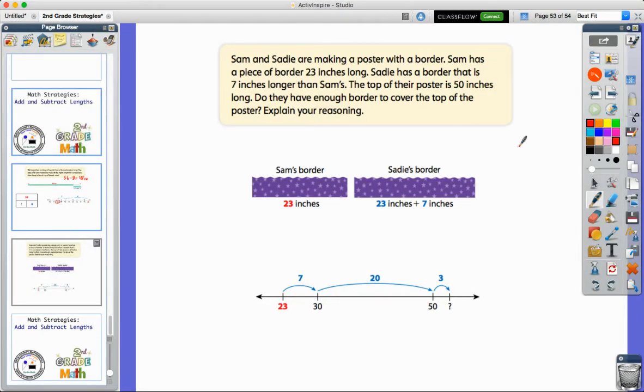First of all, I know that Sam's is 23 inches long. I know exactly how long Sam's piece of the border is. And I see that right here in this picture. But it says Sadie's piece is seven inches longer than Sam's. So we don't know how long Sadie's is. We have to take what we know about Sam's, which was 23 inches.